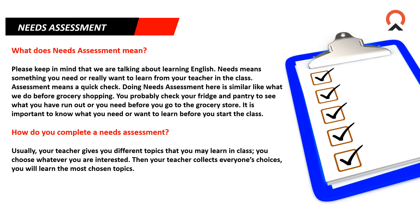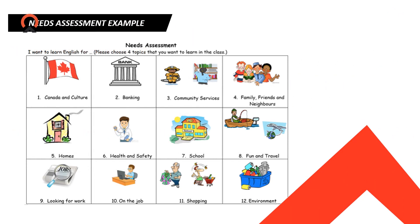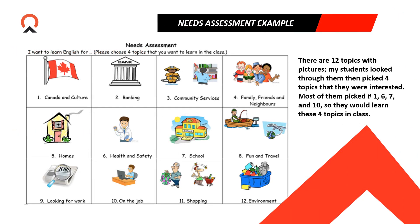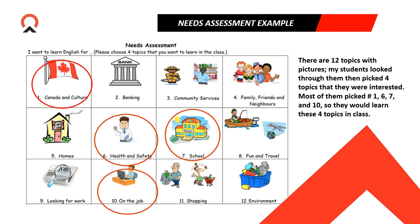How do you complete a needs assessment? Usually your teacher gives you different topics that you may learn in class. You choose whatever you are interested in, and then your teacher collects everyone's choices. You will learn the most chosen topics. Let's take a look at an example of a needs assessment I used with my CLB 2 class. There are 12 topics with pictures. My students looked through them and picked 4 topics they were interested in. Most of them picked numbers 1, 6, 7, and 10, so they would learn those 4 topics in class.